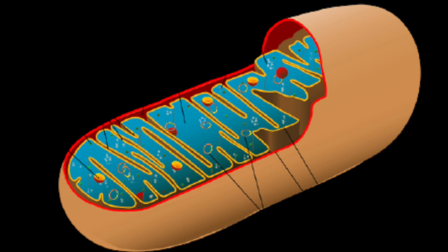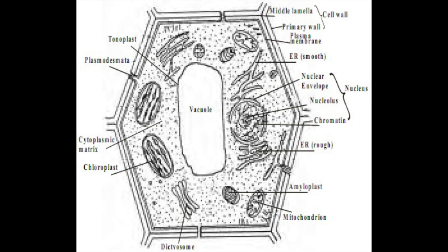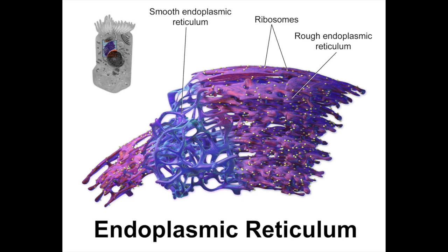The cytoplasm and the cytoskeleton both give the cell its shape. Without them, the cell would merely fall apart. The cytoplasm looks like jelly inside of the cell, while the cytoskeleton is more like support bars that give the cell its shape by supporting the outside.